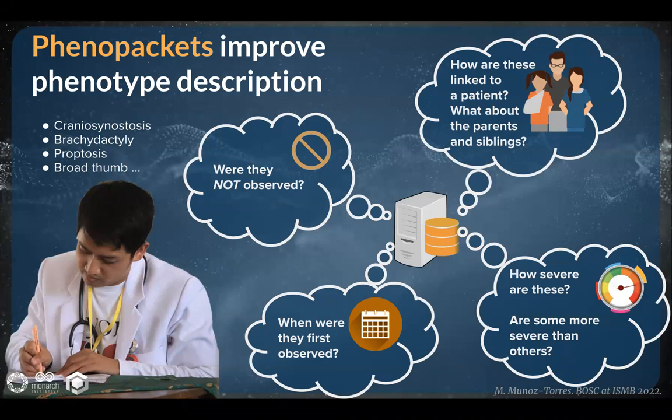Phenopackets allow us to exchange information about the patient, including identifiers and age of collection, as well as details about each of the observed phenotypes — including whether or not a phenotype was observed, when it was first observed, how it was observed, how severe the phenotype is, and how each phenotype is linked to a patient, to their genomic information, to the samples that were collected, and when available, to the patient's parents and siblings. In the latest version of the standard, we are including improvements for the representation of cancer and COVID-19 phenotypes.